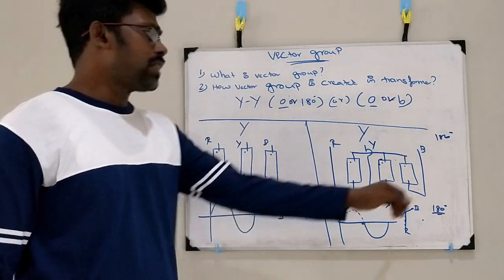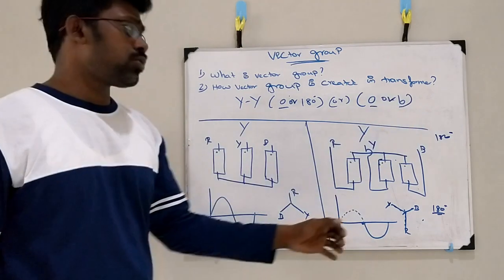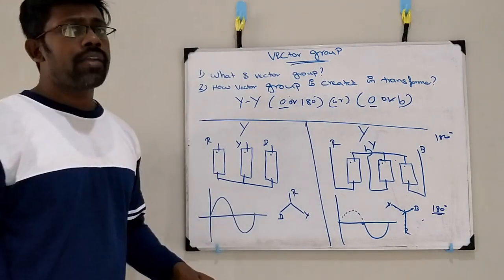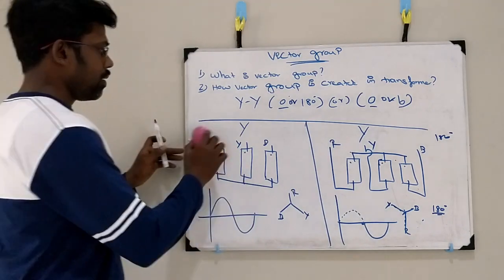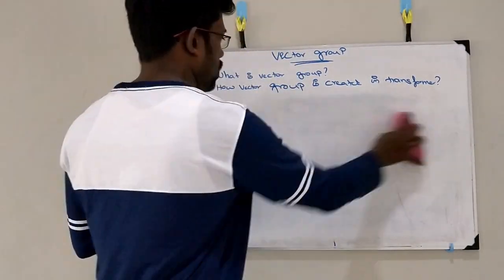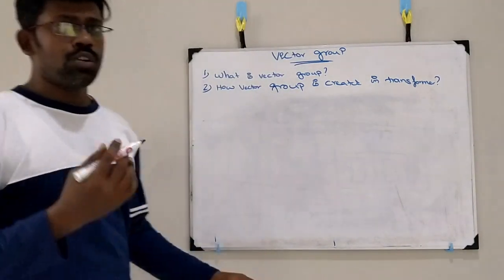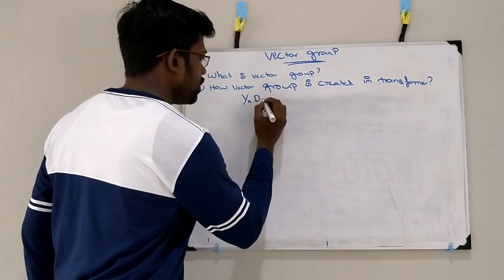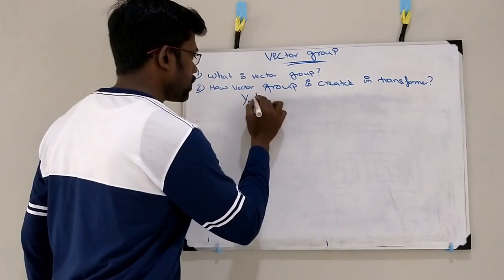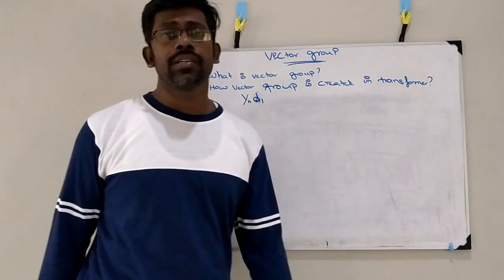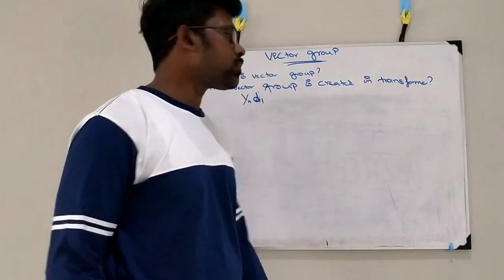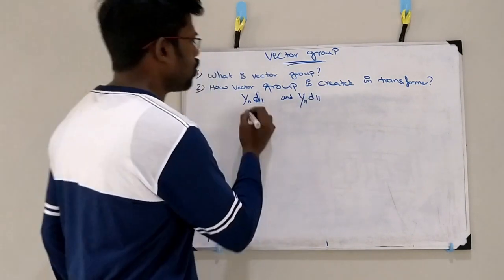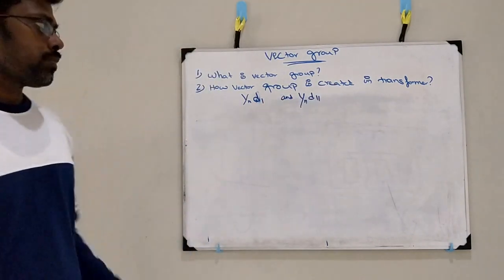So this phase shift is denoted as a vector group, and from this vector group we can also identify the winding diagram. You can also see the second example — I am going to show for star and delta formation. Let us see YD1 and YD11 — how to form these two vector groups, we can see clearly.